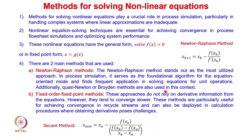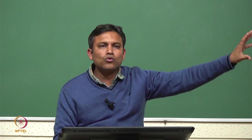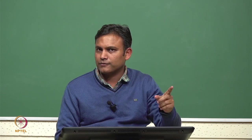The fixed-point and secant methods do not rely on derivative information, making them suitable for cases like matching recycle output to assumed input. Quasi-Newton or Broyden methods are also used in this context. All these derivative-based methods require initial values; depending on those starting values, the algorithm may diverge.